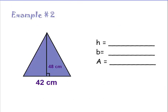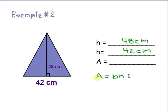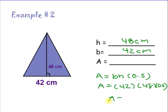Let's look at Example 2. Here we have another triangle. The height from top to bottom is 48 centimeters and the base across the bottom is 42 centimeters. We write our formula: area equals base times height times 0.5. Area equals 42 times 48 times 0.5. Take your calculator and multiply all of those together: 42 times 48 times 0.5 gives you 1,008. Your complete answer is 1,008 centimeters squared.